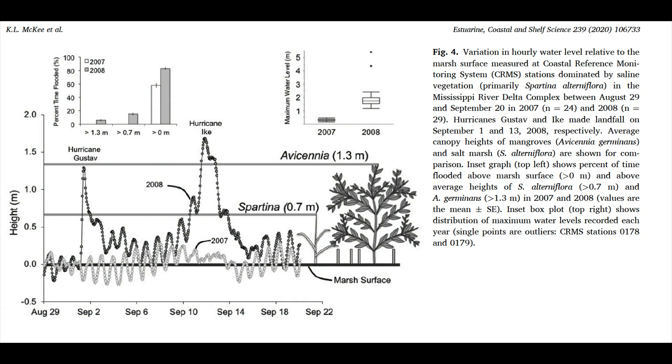The title of this figure describes what data are plotted, hourly water levels relative to the marsh surface measured at stations established in saline areas dominated by a marsh grass over the same period in 2007 and 2008. The drawings of vegetation heights provide additional information showing that water levels during two hurricanes overtopped the plants. The inset graphs are also explained.